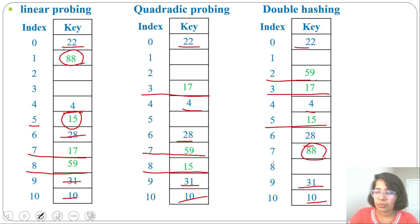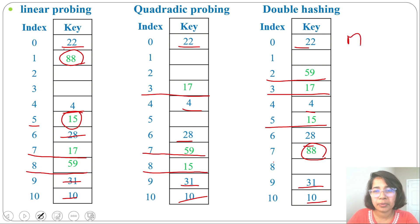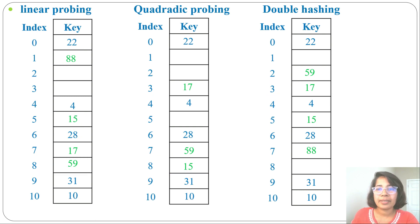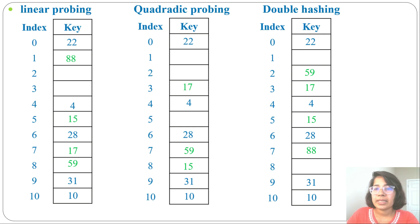If m is prime or a power of 2, then double hashing is better than linear probing and quadratic probing. Here m = 11, which is a prime number, so double hashing is better than quadratic probing. In hashing, I discussed direct address table, hash table, hash function, chaining, and open addressing. In open addressing, I discussed linear probing, quadratic probing, and double hashing with examples. If this lecture is helpful, please like, share, and subscribe.